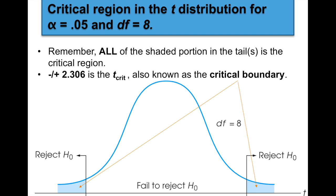Keep in mind that if you have a two-tailed test, you're going to have two critical regions. In the shaded parts shown here, T equals negative 2.306 or T equals positive 2.306 — you have two critical boundaries set by the alpha level. In this example, degrees of freedom equals 8, so T crit equals plus or minus 2.306.